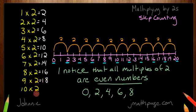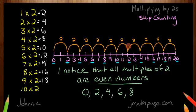And the last one: skip counting by 2, ten times. You probably already know the answer to this one. Let's try it out. 1, 2, 3, 4, 5, 6, 7, 8, 9, and 10. And you knew it — it's 20. So 10 times 2 equals 20.